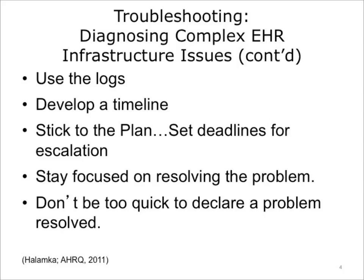Understand where these logs are stored, as well as how to access and decipher them. The logs can provide additional insight about where things went wrong and usually offer some sort of explanation as to the cause. After researching the issue, develop a timeline of events leading up to the issue. This is particularly useful for issues resulting from a series of events occurring over a period of time. IT staff sometimes get tunnel vision and can become so engrossed on the issue that they lose track of time. Have an escalation plan in place to bring in other resources and stick to it. It's also important to stay focused on resolving the problem at hand. A major outage is not the time for finger-pointing or for egos to get in the way of completing the task. Once the outage or problem has been resolved, you will have time to analyze the root cause and make procedural changes to help prevent similar issues from reoccurring.